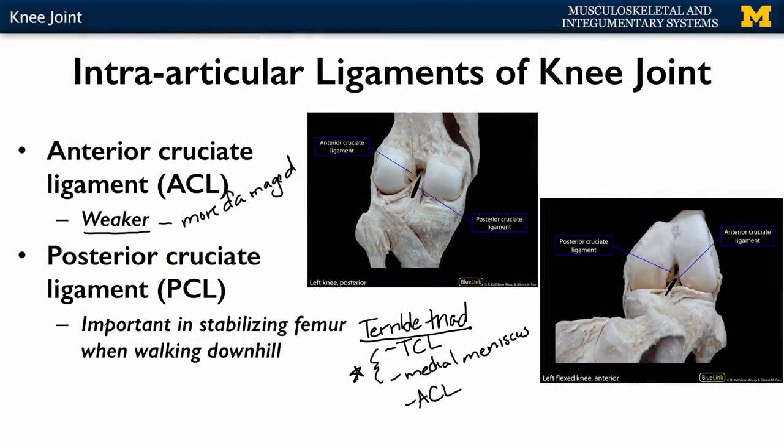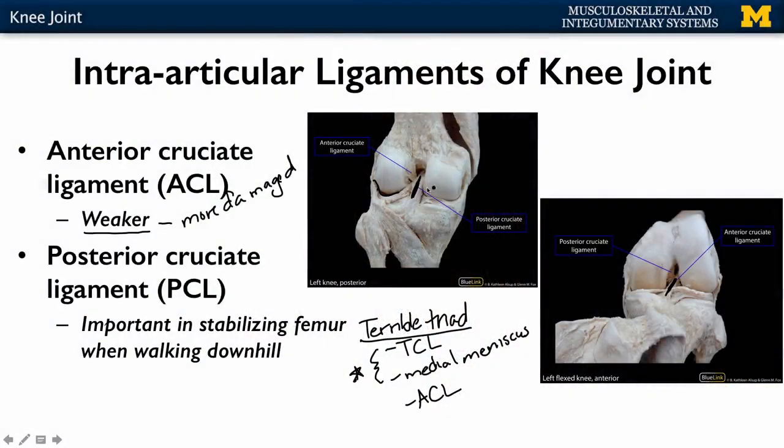The PCL is considerably stronger than its partner on the anterior side, and it's really important when you're walking downhill or walking downstairs — it's the ligament keeping the femur from moving too far from where it should be, allowing for the appropriate amount of flexion and extension. It's important in terms of locomotion and is less likely to be damaged. If it is damaged, it has bigger implications than the anterior cruciate ligament.